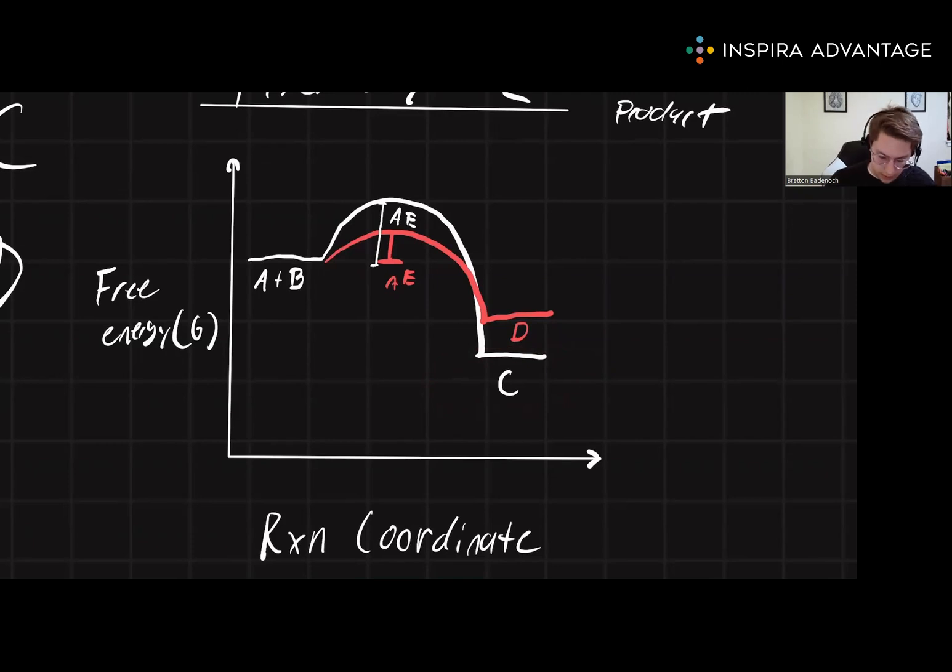So what that would look like, let's change this. Let's say that instead of D having a small activation energy, D had a really high activation energy. Well, now because D has a higher activation energy, it's going to form more slowly. So in this case, now C is both our thermodynamic and kinetic product. This is the thinking you will need to develop to do well on the MCAT.